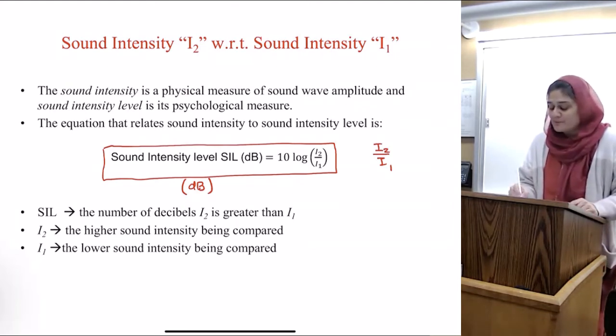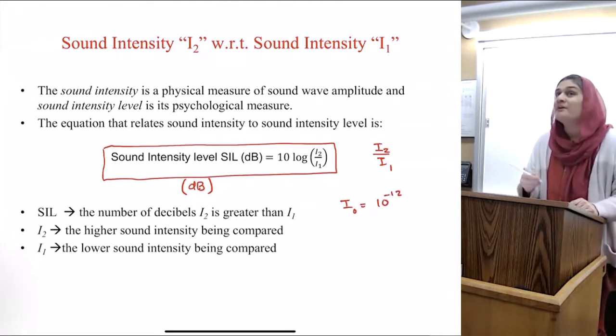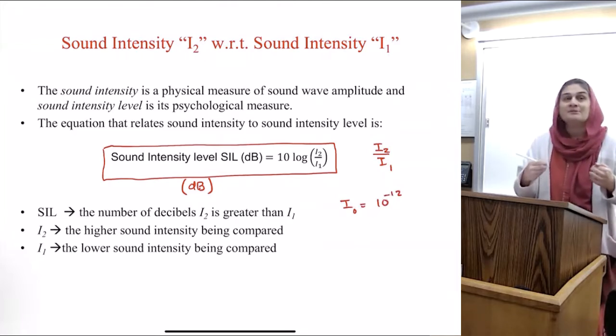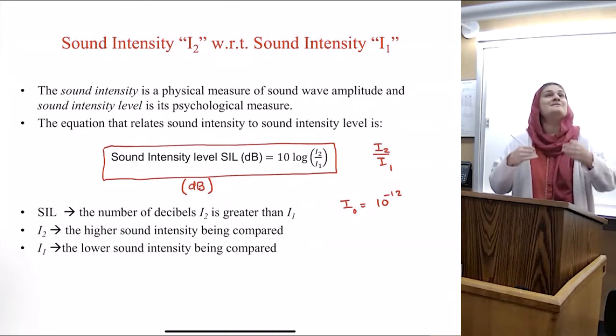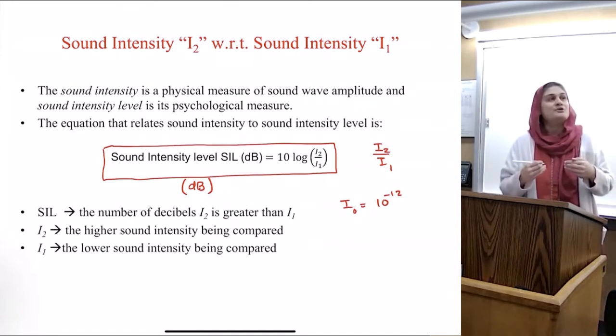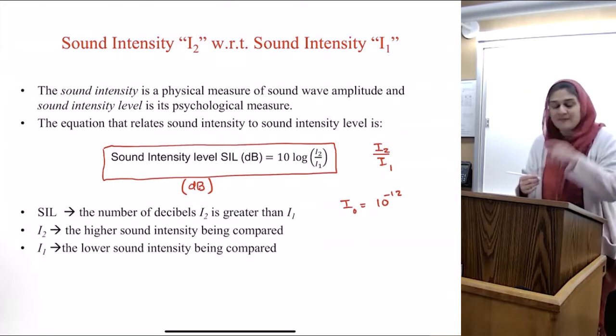And all decibel means is an intensity above the threshold intensity that humans can hear. Remember when I said that the intensity that humans can hear is 10 to the minus 12? That's a very, very tiny number. So instead of talking about intensities, we actually talk about intensity levels, which are given by this formula here.